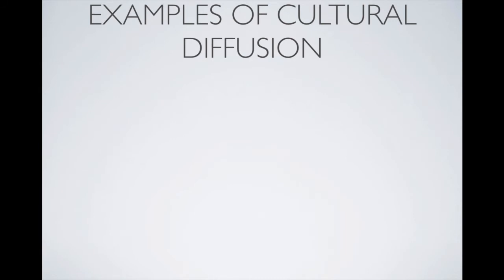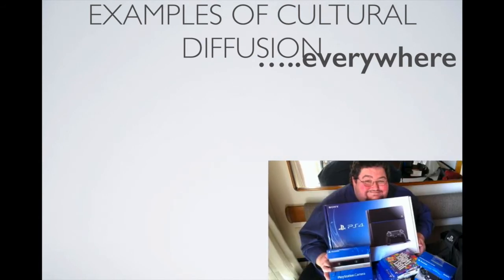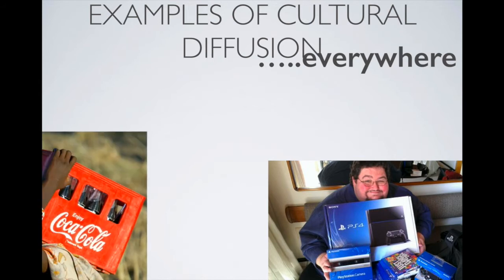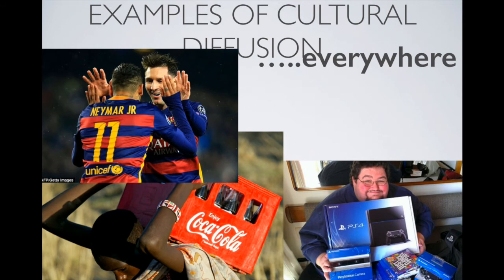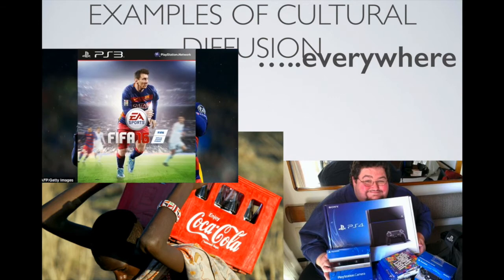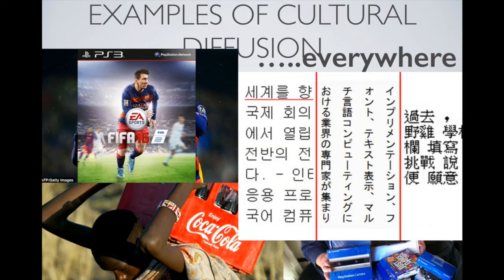Today we see cultural diffusion at an even greater scale. For example, you see an American man holding a Japanese-made video game; someone in Africa carrying bottles of Coca-Cola, an American company's beverage; a Spanish soccer team with two players from Argentina and Brazil; and one of those players appearing on a video game from the American company EA Sports. Language is another perfect example — Chinese spread to Korea, where Koreans created their own language, Hangul, and the Japanese also created their own version based on Chinese.